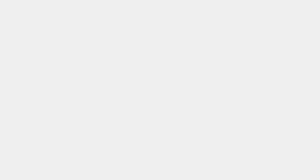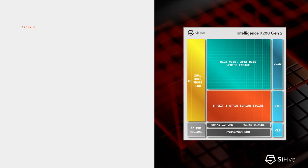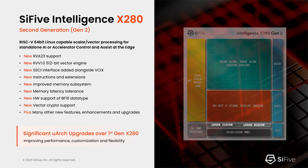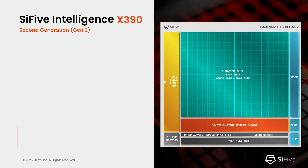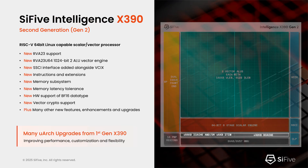Now let's look at the existing members of the intelligence family and the improvements we've made for the second generation. The X280 core was very popular in the first generation; improvements have focused on new instruction extensions, improvements to the memory system, and providing even deeper memory latency tolerance. Another important feature is adding the new Sci-5 Scalar Coprocessor Interface as a second way to connect to coprocessors. Similarly, with the wider X390 core, we've done the same kind of upgrades: new instruction extensions, improved memory subsystem performance, and adding the SSCI interface.